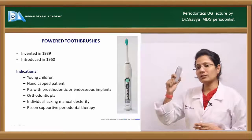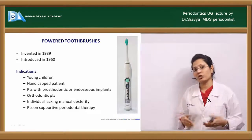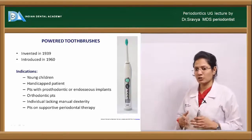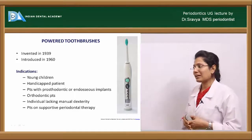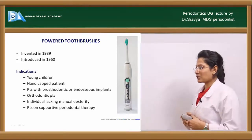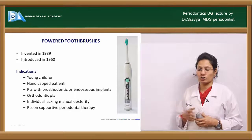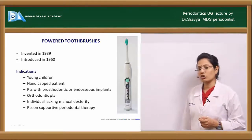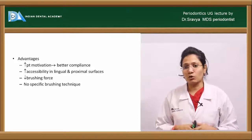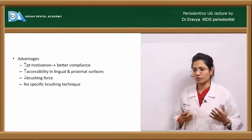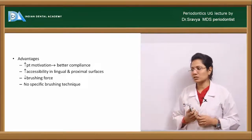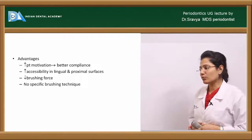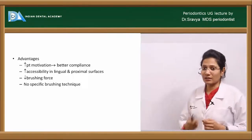Powered toothbrushes were invented in 1939 and started being marketed around 1960. The indications for use include young children, handicapped patients, patients with prosthodontic and endosseous implants, orthodontic patients, individuals lacking manual dexterity, and patients on supportive periodontal therapy. The advantages include increased motivation and better compliance, increased accessibility to lingual and proximal surfaces, decreased brushing force, and no specific brushing technique is required.